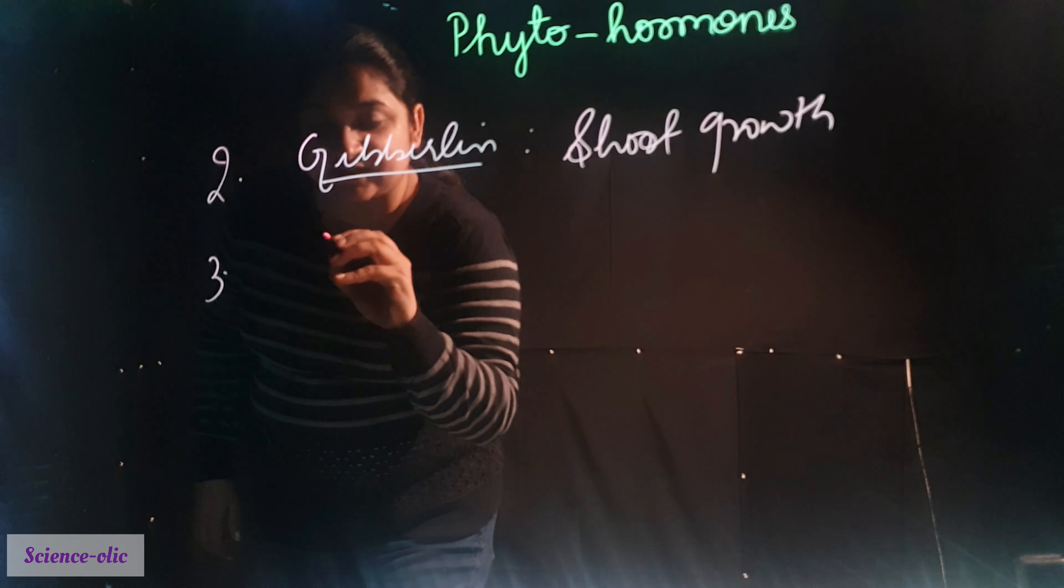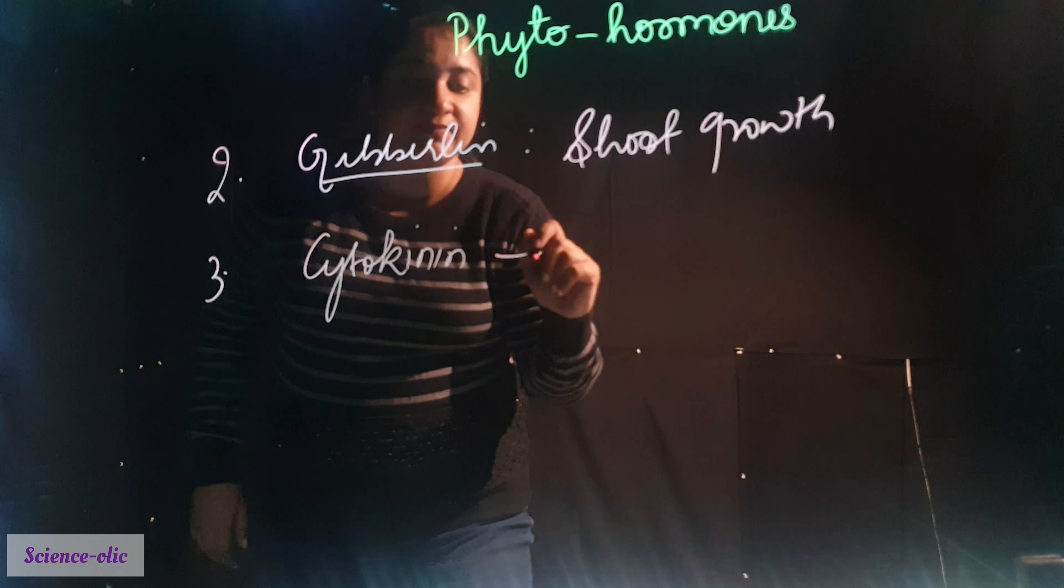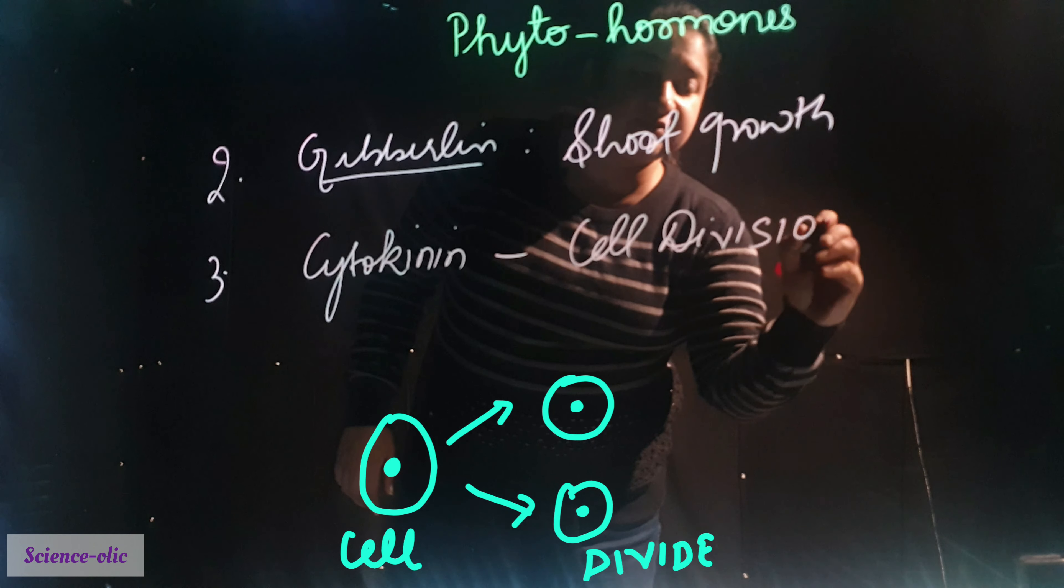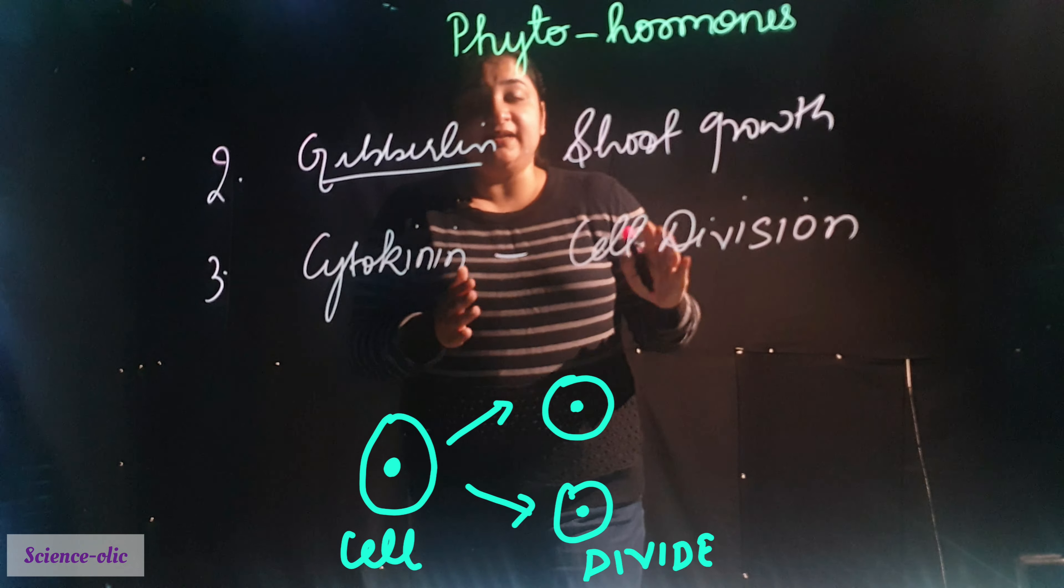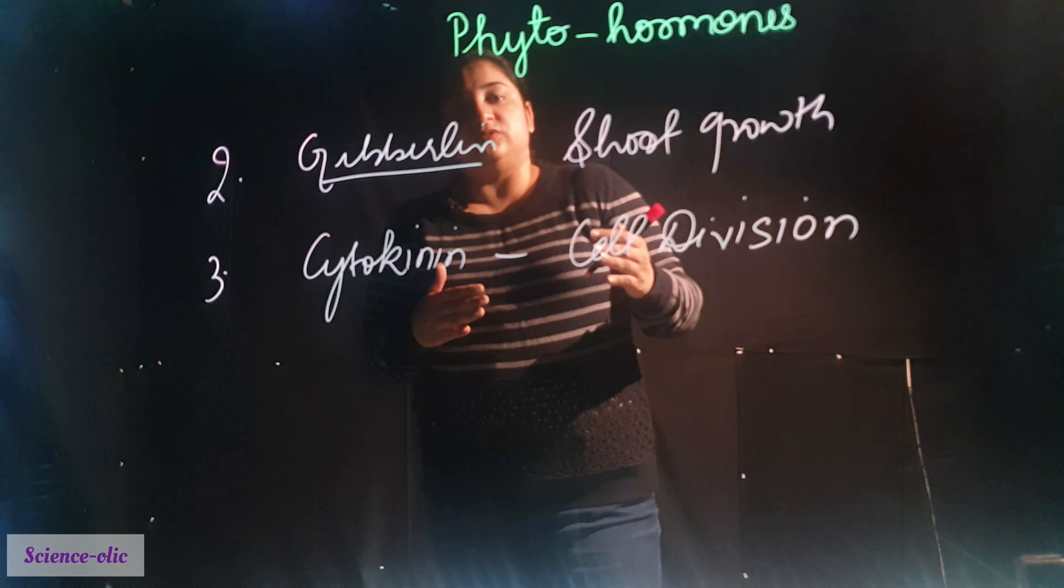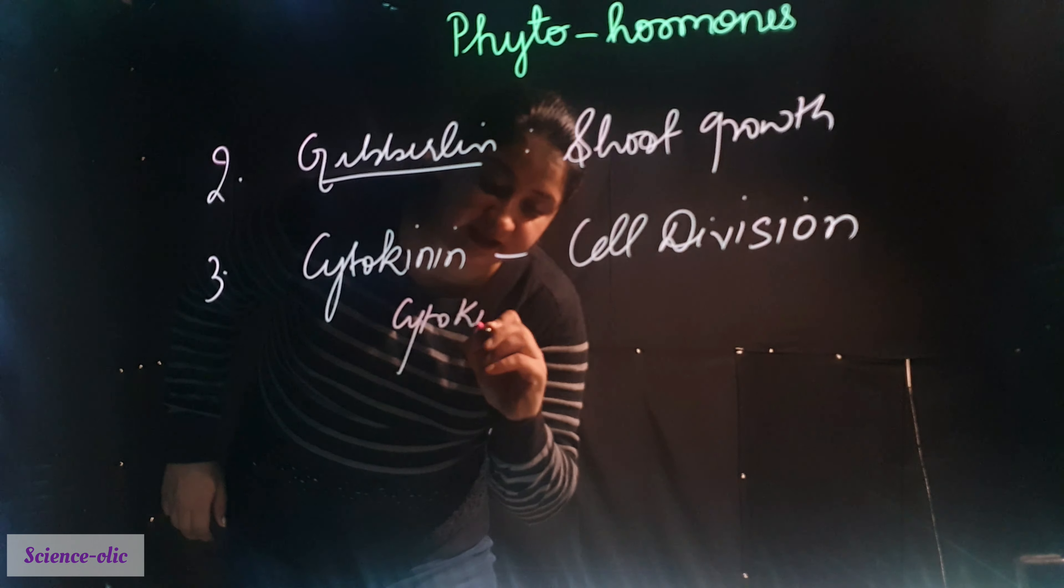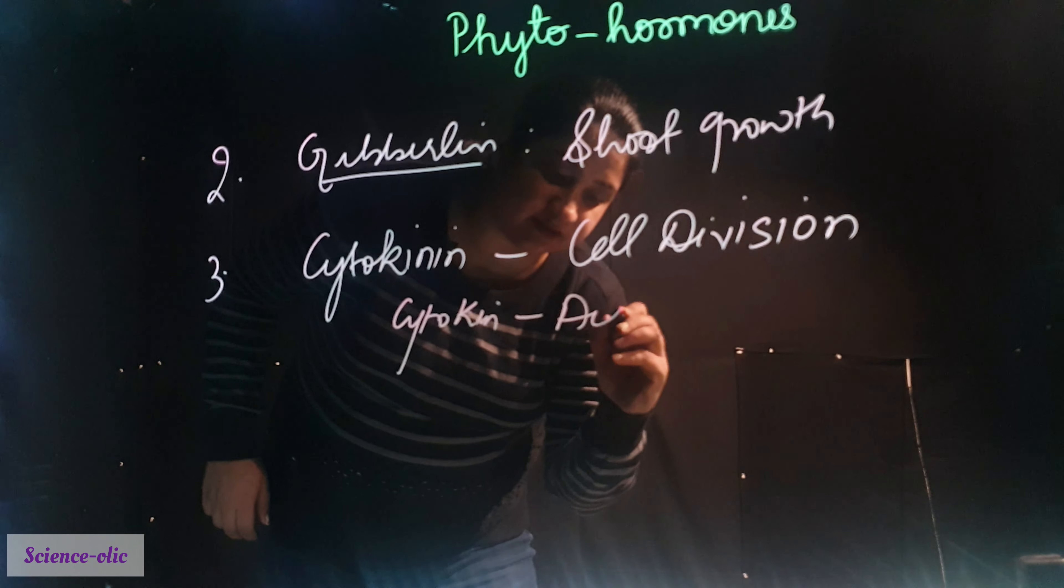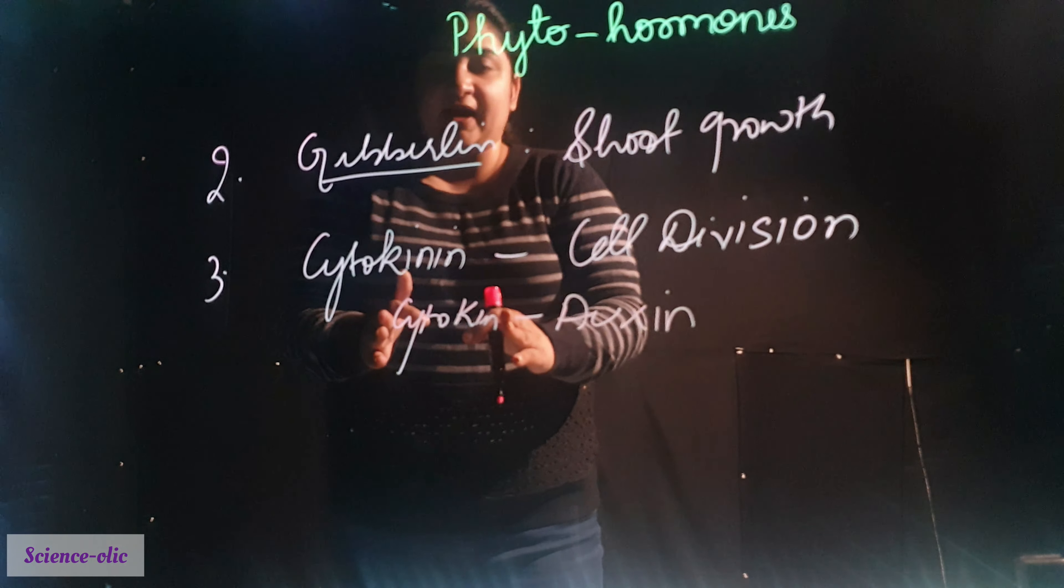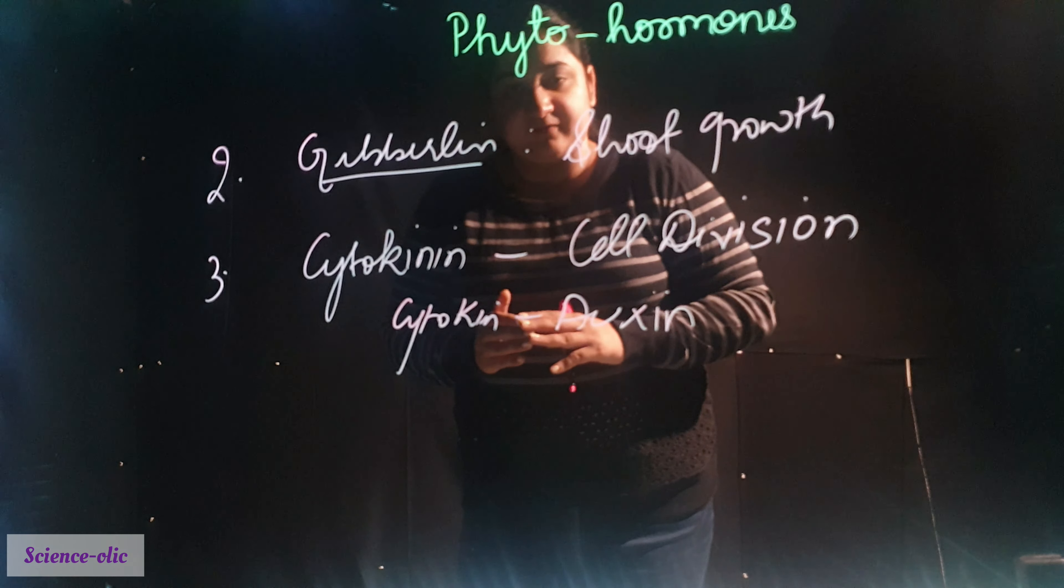The next is cytokinin. Cytokinin means cell division, it's main function. It helps the cell in cell division. The cell divides and forms the growth hormones. Cytokinin helps with the help of auxins. These are interlinked. If there is no auxin, the cytokinins, the cell will not divide or it will not perform its function.